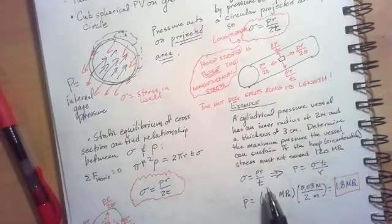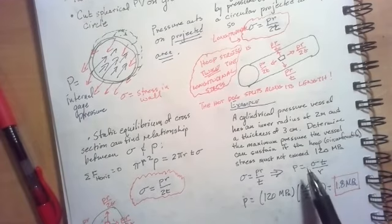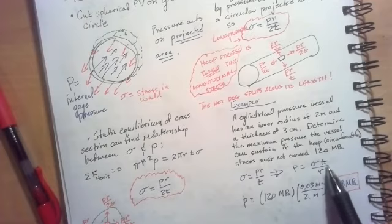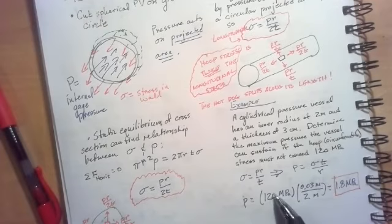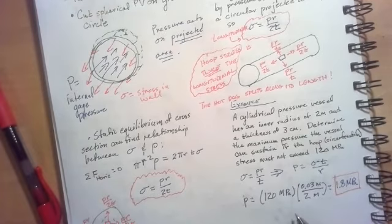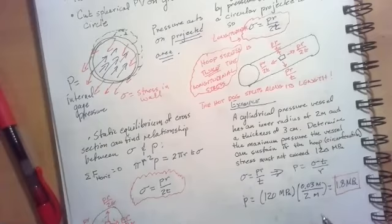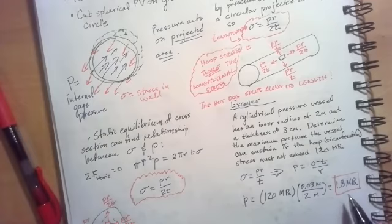We know that we're interested in the hoop stress, so we're going to use the hoop stress formula sigma equals PR over T. Solving this for P, we end up with P equals sigma T over R. We're going to plug in the maximum stress that we can have for sigma because that's going to give us the maximum pressure. And then T is 0.03 meters or 3 centimeters, and our radius is 2 meters. That gives us a maximum pressure that the vessel can carry of 1.8 megapascals.